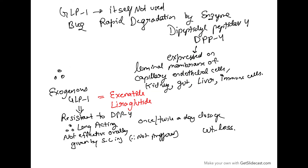Now, GLP-1 molecule itself is not used. Why? Because of rapid degradation by the enzyme dipeptidyl peptidase-4 (DPP-4), which is expressed on the luminal membrane of many cells — endothelial cells, kidney, gut, liver, and immune cells. So we are not using GLP-1 itself, but we are using exogenous formulations of GLP-1 like exenatide and liraglutide.